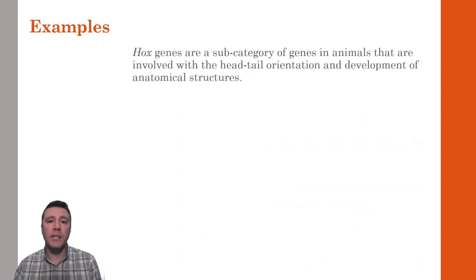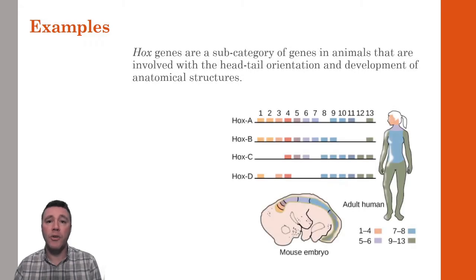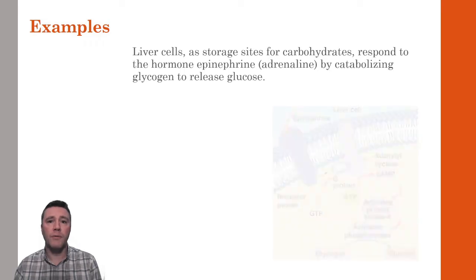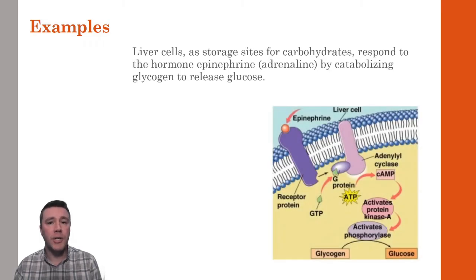In animals as varied as fruit flies, sea urchins, and humans, Hox genes are important in the development of anatomical structures, like limbs, as well as the orientation of the organism's entire body. Liver cells are storage sites for complex carbohydrates called glycogen, a polymer of glucose molecules. Liver cells respond to epinephrine by breaking down glycogen to release more glucose into the bloodstream, ultimately to be utilized by muscle cells for the production of ATP.